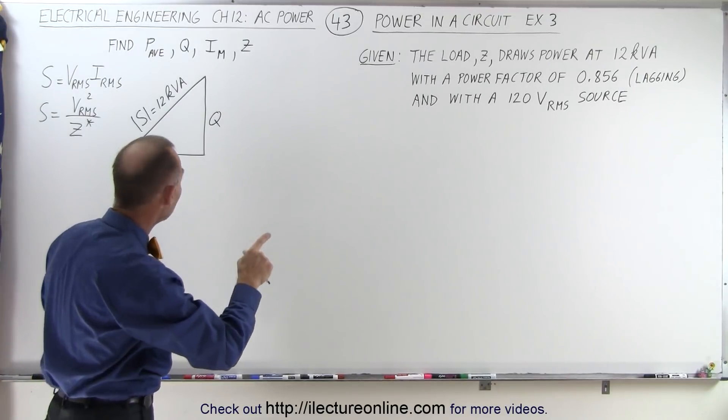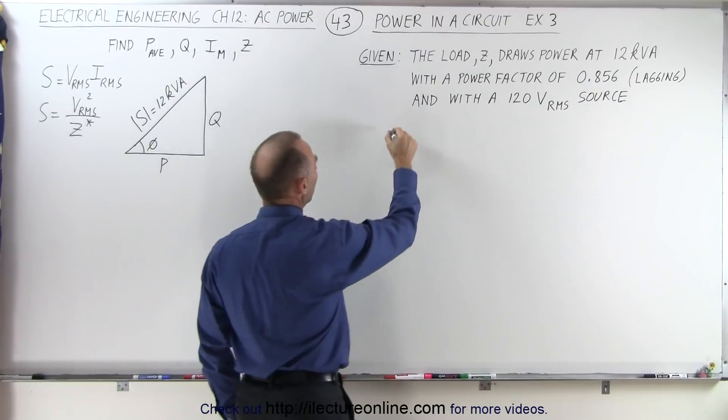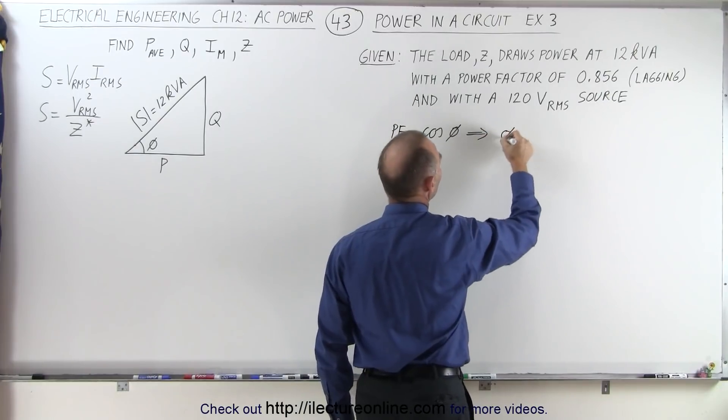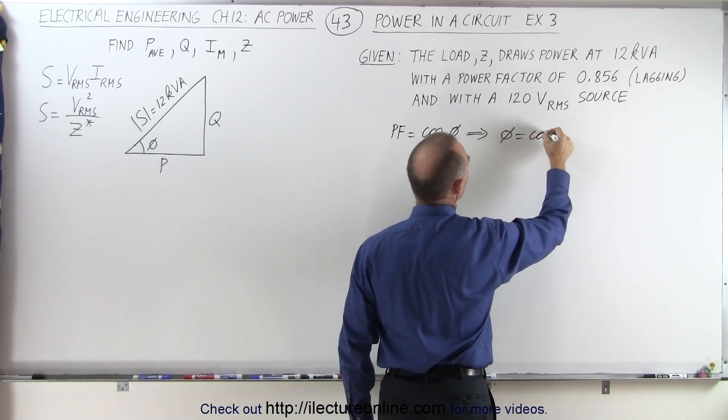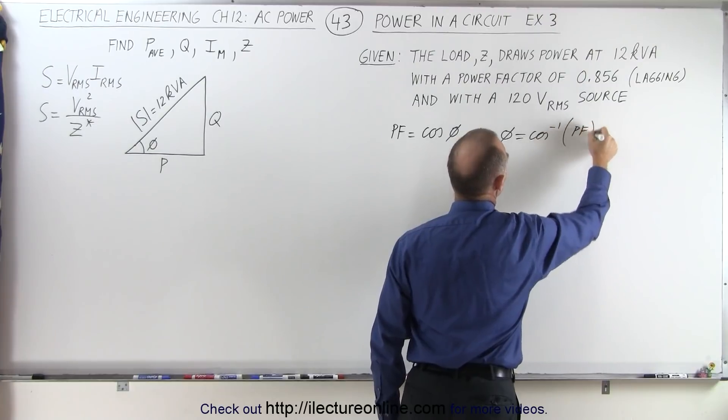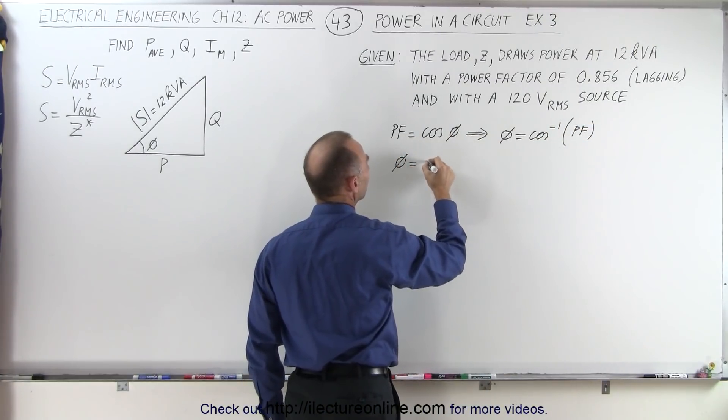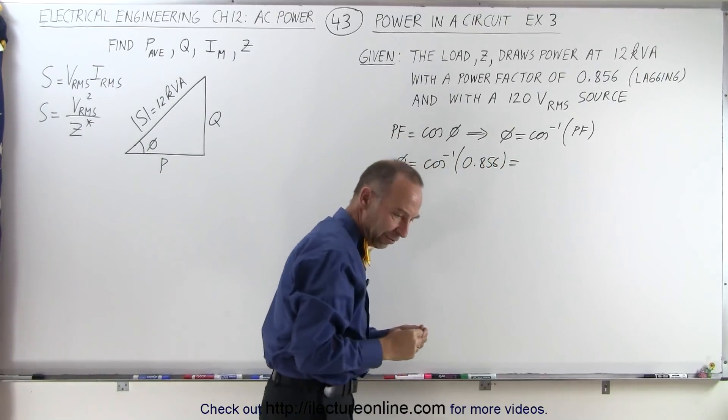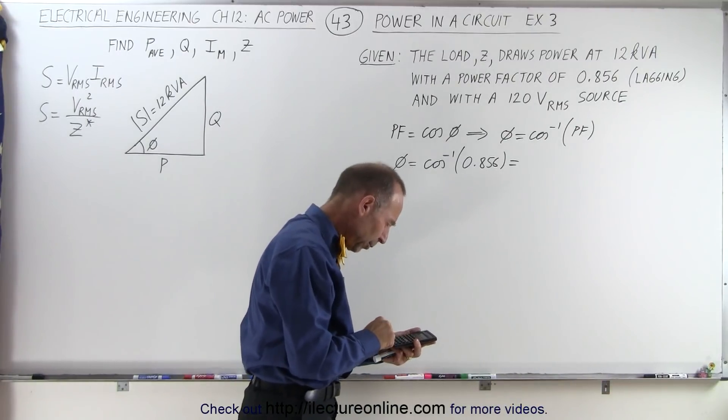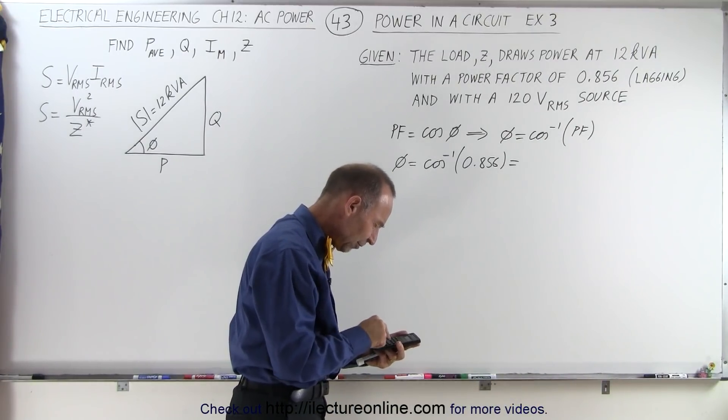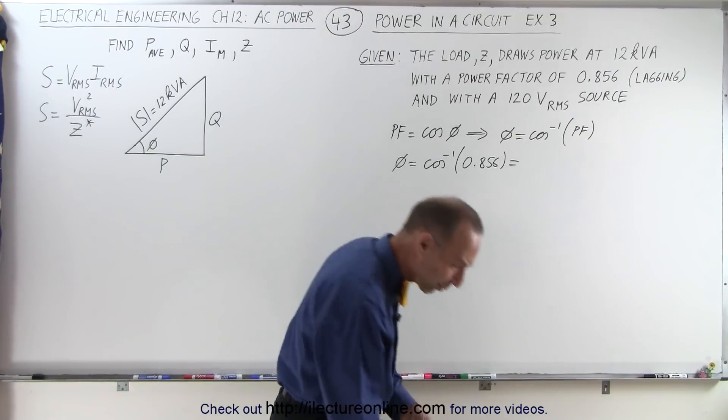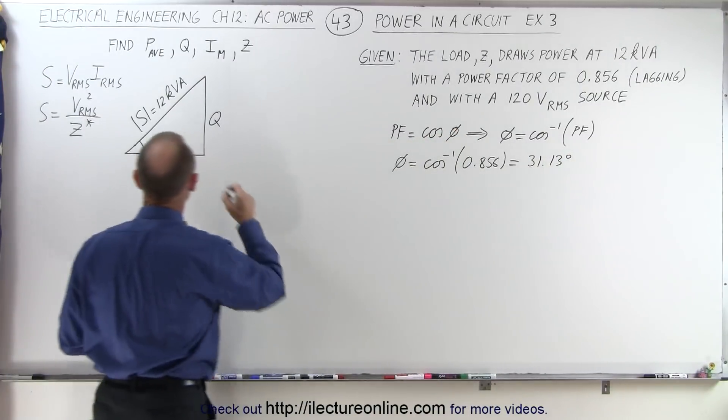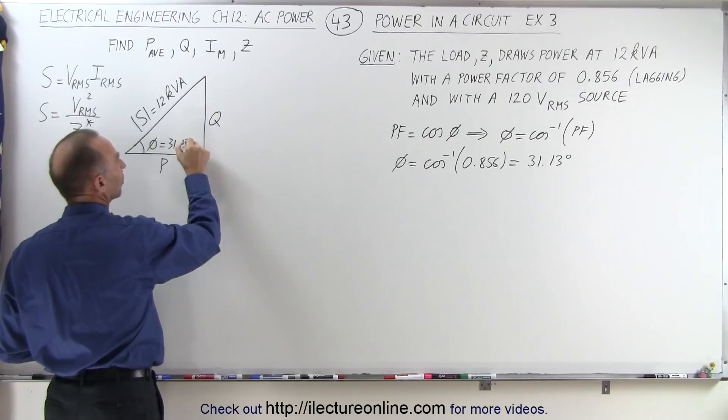First of all, since we're given the power factor, we should be able to find the angle, because the power factor is equal to the cosine of the phase angle, which then implies that the phase angle is equal to the inverse cosine of the power factor, which means that the phase angle is equal to the inverse cosine of 0.856. That gives us 31.13 degrees, and that's our phase angle right here.